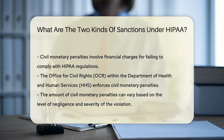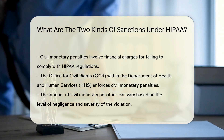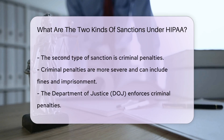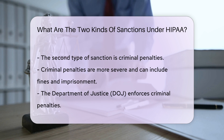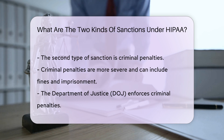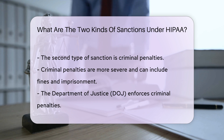The second type is criminal penalties. These are more severe and can include fines and imprisonment. Criminal penalties are enforced by the Department of Justice (DOJ). They typically apply when there is intentional misconduct or fraud — for example, knowingly obtaining or disclosing protected health information without authorization can lead to criminal charges.